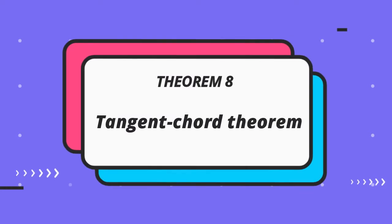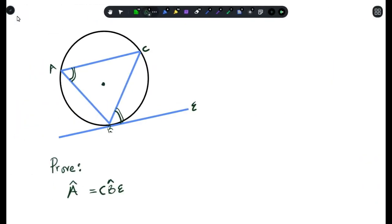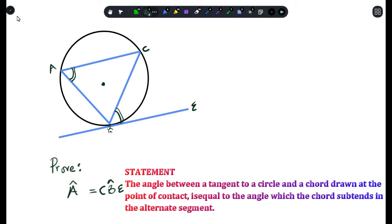In previous videos, we've talked about what a tangent is and how it works in a circle. We said a tangent is a line that passes through a circle but only touches it at one point. This is how you prove Tangent-Chord theorem. We are trying to prove the statement: the angle between a tangent to a circle and a chord drawn at the point of contact is equal to the angle which the chord sustains in the alternate segment.